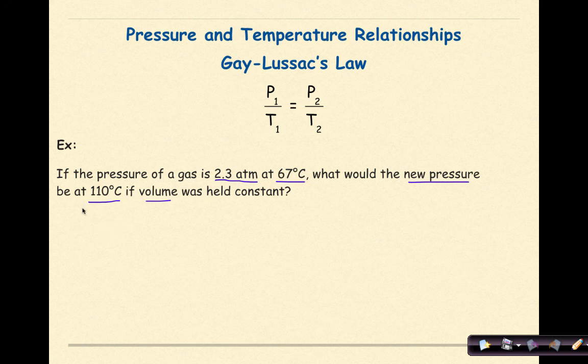The first thing I'm going to do here is convert 67 degrees Celsius into Kelvin. So I'm going to add 273, and as a result I will get 340 Kelvin.